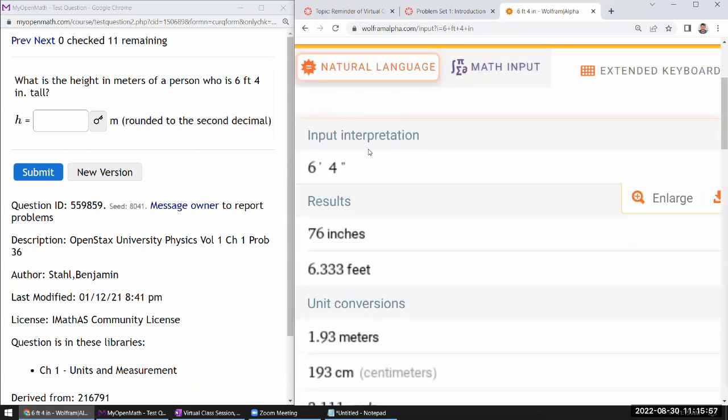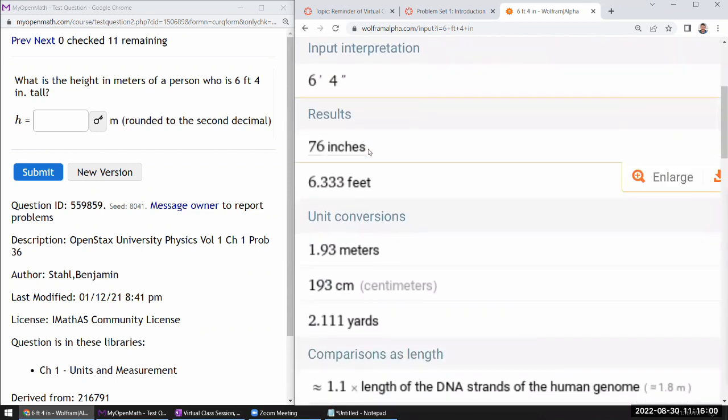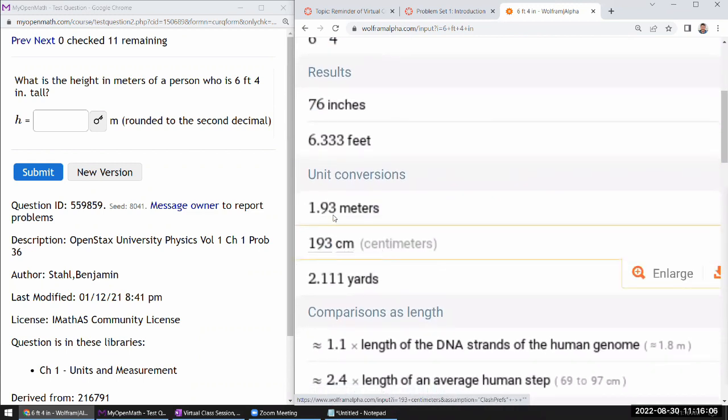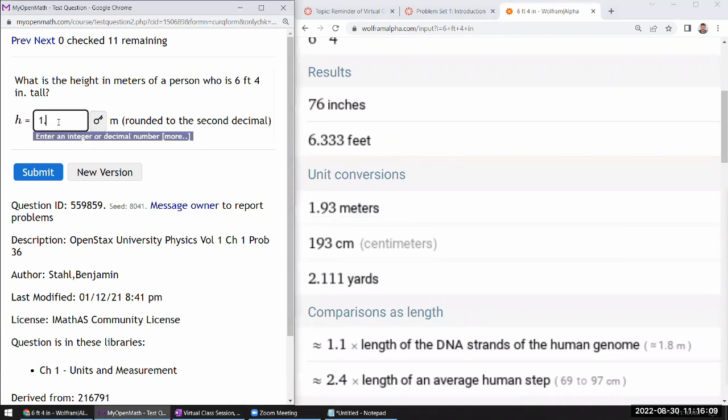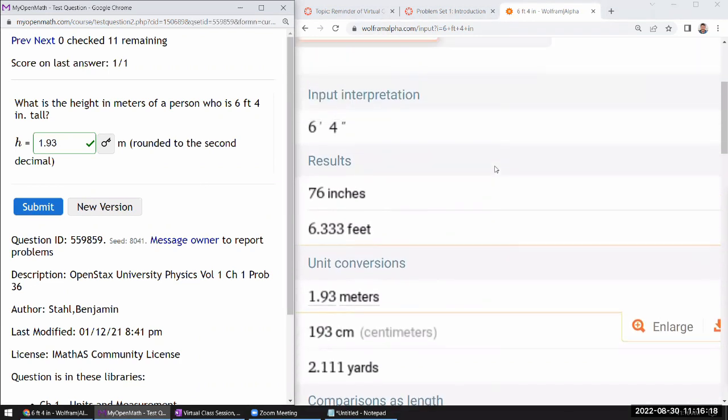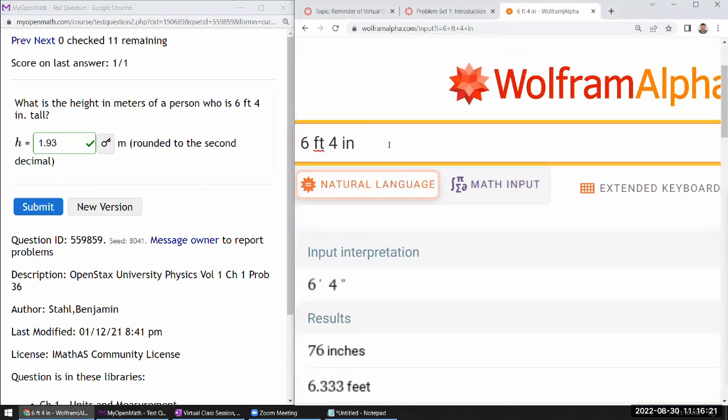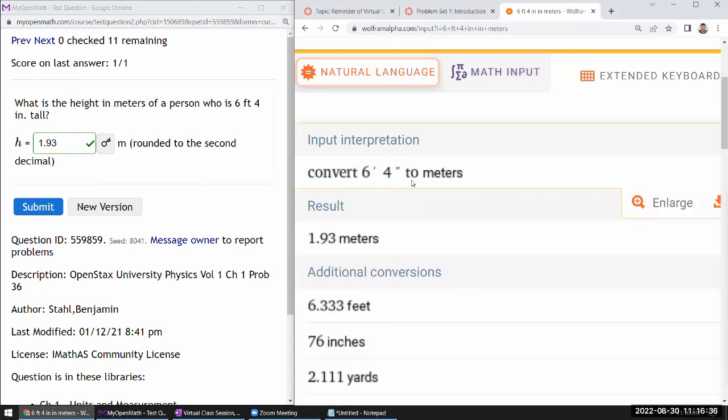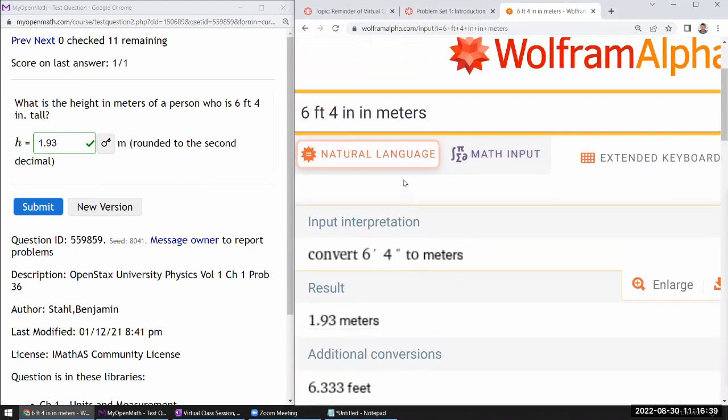It uses some kind of AI, so I always double check input interpretation. It looks like it understood me correctly. By default it'll give me a bunch of lists with different common units. Meter is actually one of them, so there's my answer: 1.93 meters. If you wanted it to look less like just Google searching, you could say six foot four inches in meters. It interpreted it correctly - two meters.